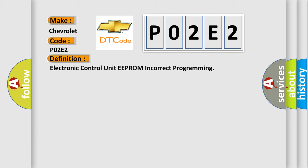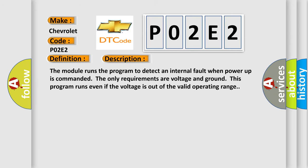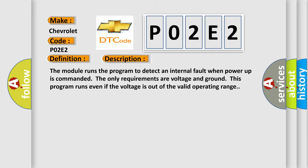And now this is a short description of this DTC code. The module runs the program to detect an internal fault when power-up is commanded. The only requirements are voltage and ground. This program runs even if the voltage is out of the valid operating range. This diagnostic error occurs most often in these cases: The module has detected an internal malfunction.